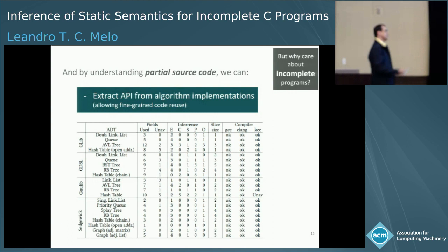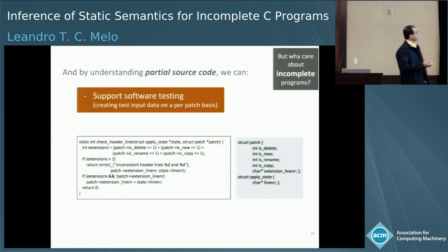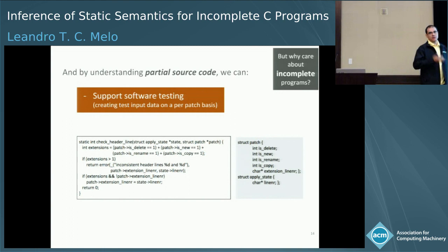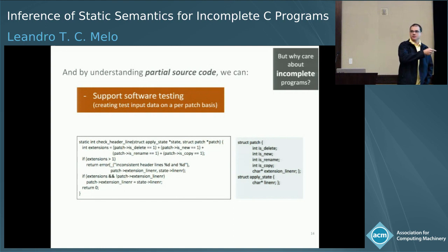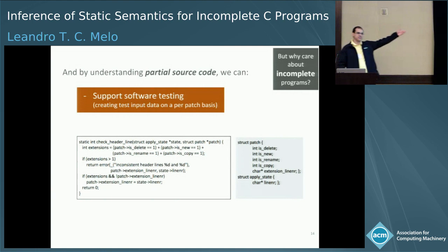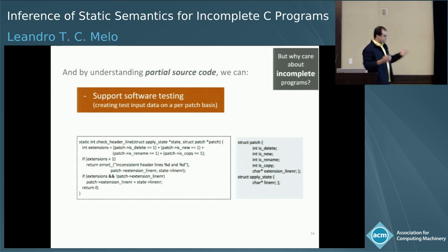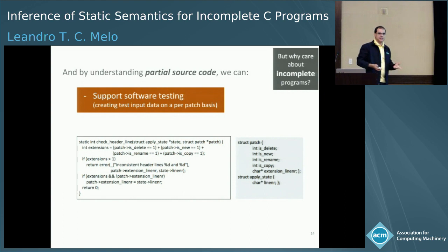Understanding partial source code is also beneficial for software testing. A tool like Pathcrawler generates input test data for programs, but again it requires build specifications and the entire setup needed to build. This is a patch that went to the Git repository — to the Git project itself. It does a check during git commit. This function was an actual patch there, along with the call to the function. What if we can just take that patch — about 10 lines of code — and generate input test data without having to compile the entire project? We did that: we reconstructed only the structures that would be necessary, submitted it to Pathcrawler, and it generates the necessary input data that it would have generated with the entire program.